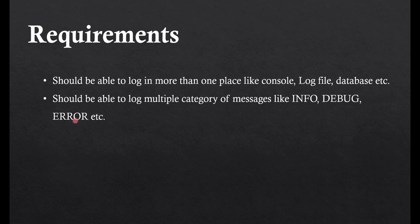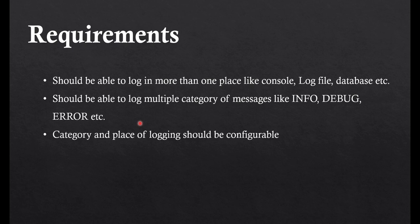If you have already used any logging framework like log4j, you must be familiar with these two requirements: logging into multiple categories and logging into multiple places — it can be more than one sink. We'll code for these two categories. The third requirement is that the category and the place of logging should be configurable. The above two points should be configurable and can come from a property file. For simplicity, we will hard-code it, but it can be put into a property file.